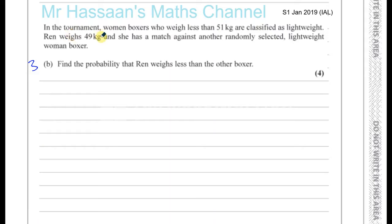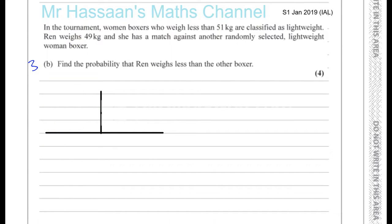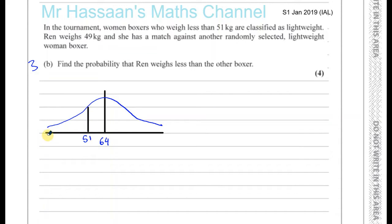In the tournament, women boxers who weigh less than 51 kilograms are classified as lightweight. Wren weighs 49 kilograms and she has a match against another randomly selected lightweight woman boxer. Find the probability that Wren weighs less than the other boxer. Let's get our normal distribution curve. We know that the mean is 64 kilograms, and women who weigh less than 51 kilograms are lightweight, so 51 kilograms is here, and 49 kilograms is here.